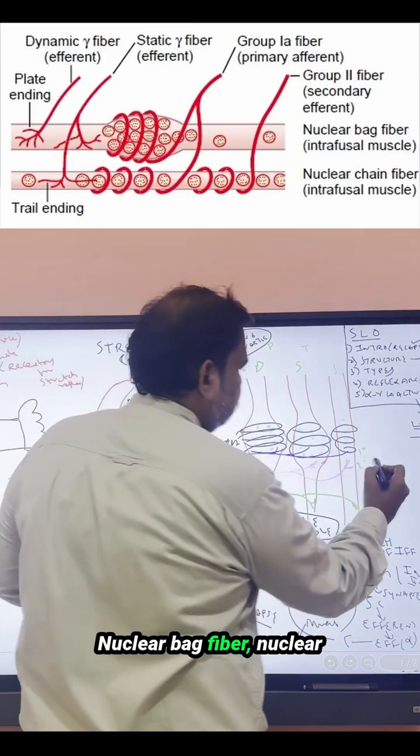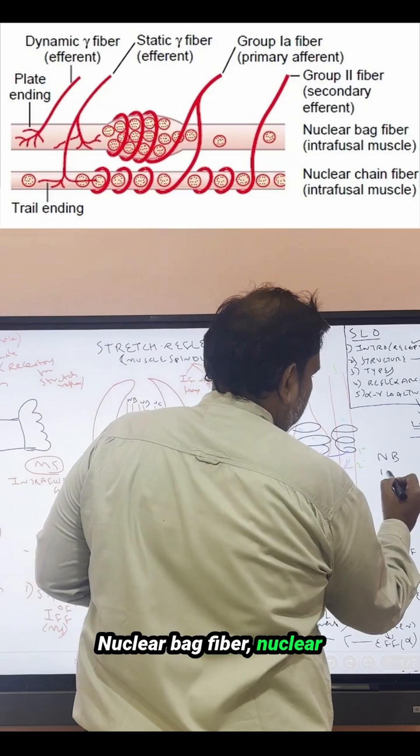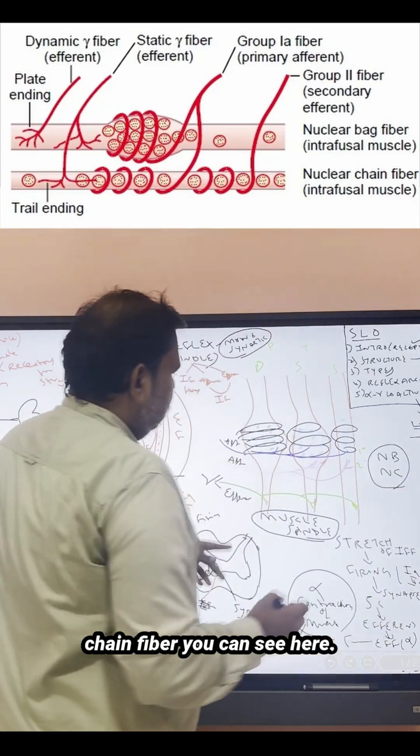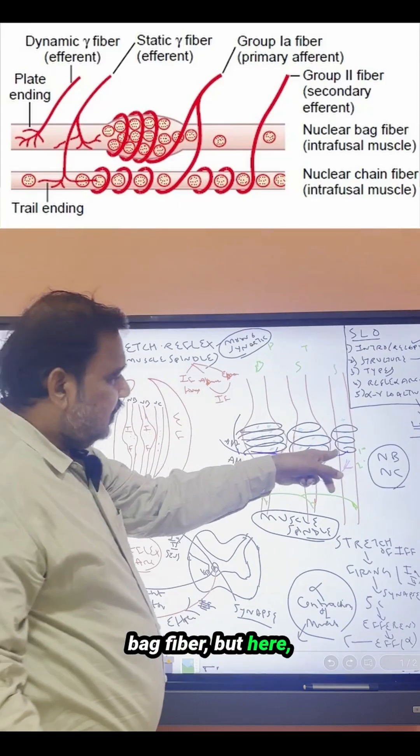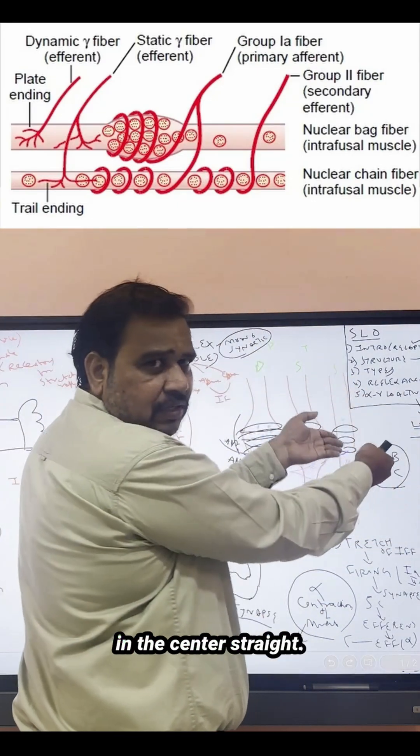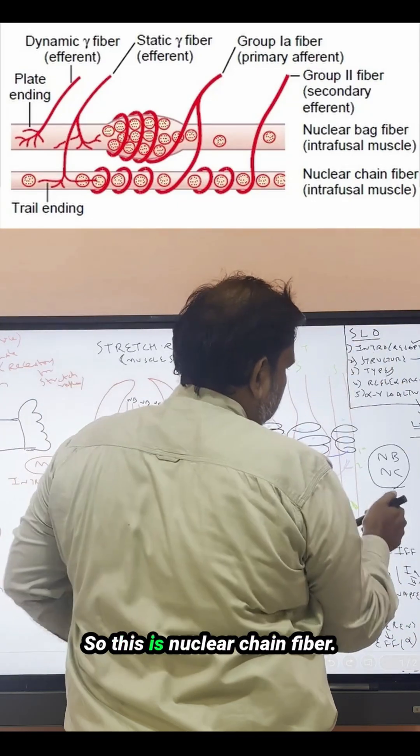Nuclear bag fiber and nuclear chain fiber. You can see here, so obviously this is bag shape, this is also nuclear bag fiber. But here there is no bag shape, there is no swelling in the center - straight. So this is nuclear chain fiber.